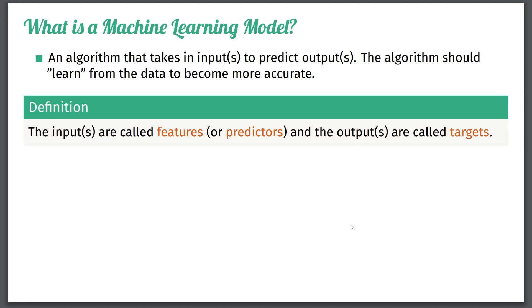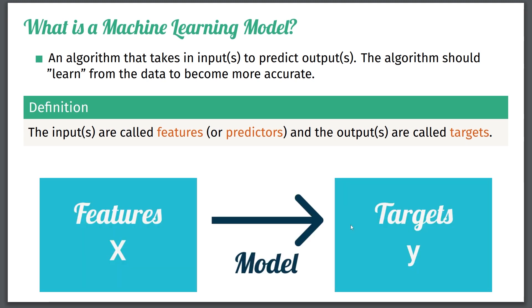So just some definitions, the inputs to a machine learning model are called features, some other people call this predictors, and outputs are called targets. This is just terminology, I'll try to stick to the features and targets or inputs or outputs. I just wanted you to know that these are essentially the same things. You have your features, x in this case, and then you use a machine learning model to predict the targets y.